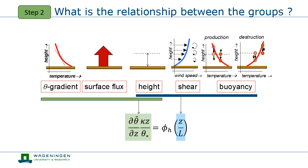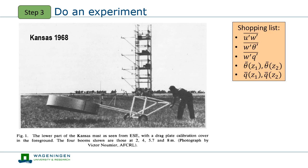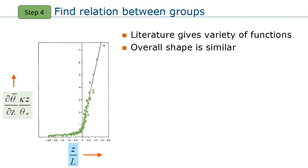The next step in our dimensional analysis is to find the relationship between those dimensionless groups. Before we can do that, we first need to do an experiment. The aim of the experiment is to measure the dimensionless groups under as many different conditions as possible. One of the first times that this was done, when the necessary equipment was just available, was in 1968 over the flat Kansas Prairie. We have to make sure that our list of variables to measure is complete, so that we can fill a plot with as many observations as possible. The literature is full of different experiments and slightly different forms of those relationships, but overall they look quite similar.